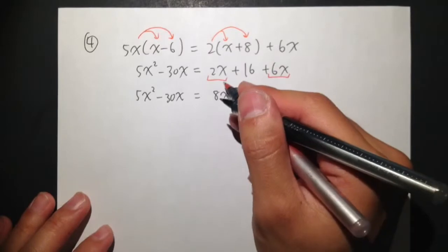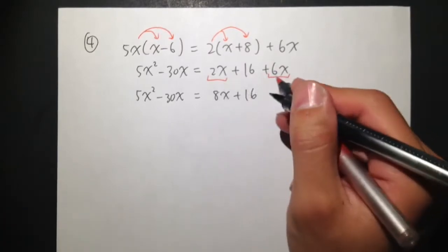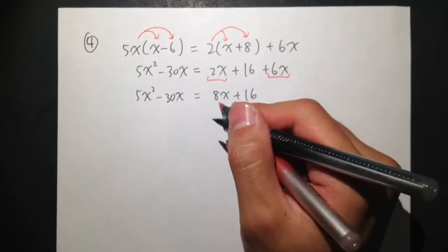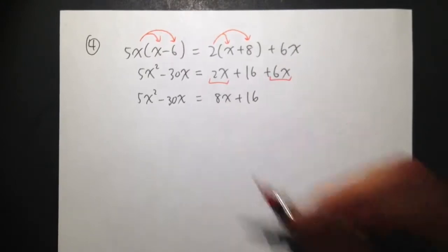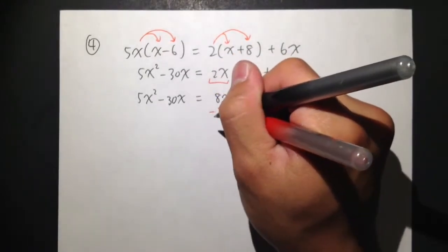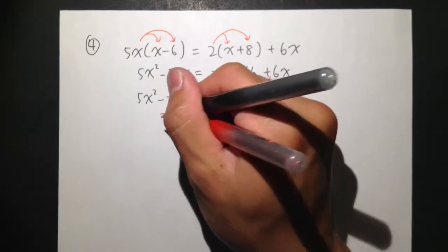So because they are on the same side, I can just combine like terms, I get 8x. And if I want to move the 8x to the other side, I will have to subtract 8x here. Subtract 8x here. Cancel here.